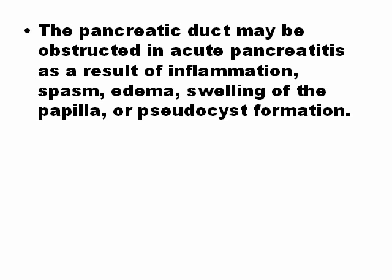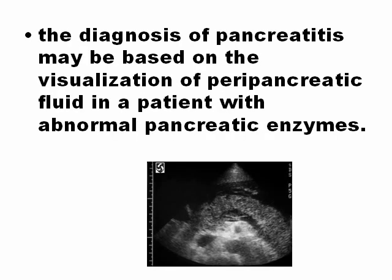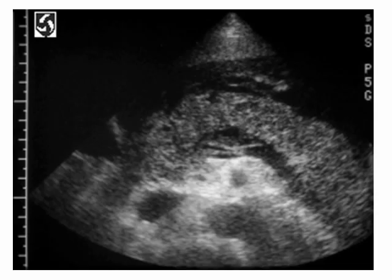The pancreatic duct can sometimes be obstructed as a result of inflammation, spasm, edema, swelling, or pseudocyst formation. The diagnosis of pancreatitis with ultrasound is sometimes made by visualizing peripancreatic free fluid in a patient with abnormal pancreatic enzymes in blood. In the picture, you can see hypoechoic areas anterior to the pancreas — this is free fluid in acute pancreatitis.